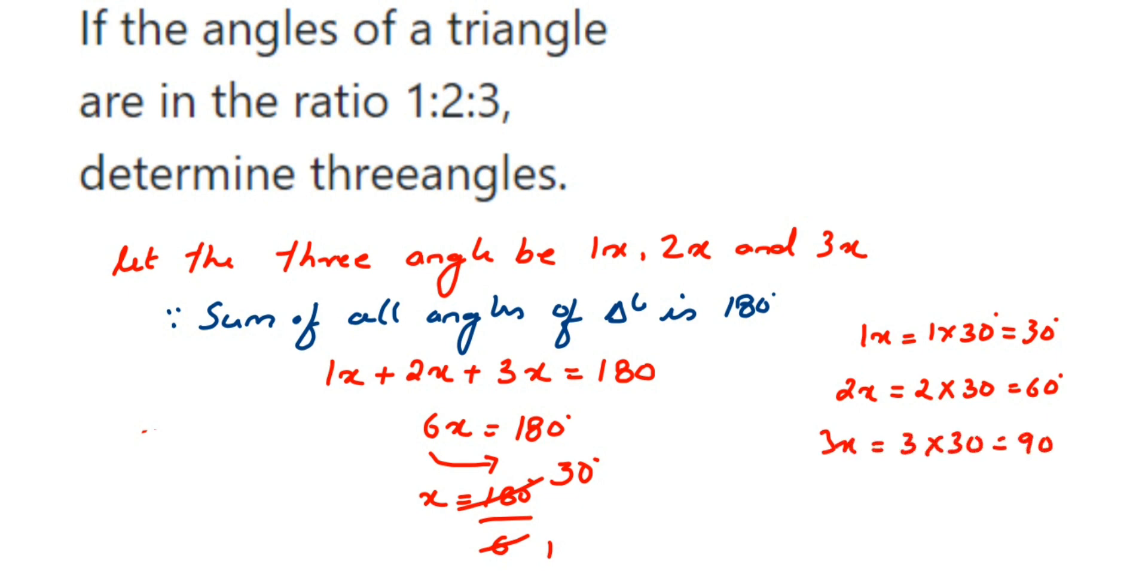Therefore, the three angles will be 30 degrees, 60 degrees, and 90 degrees. Now you can cross-check the angles - you can add up all the three angles: 30 plus 60 is 90, 90 plus 90 is 180, so this means your answer is correct. I hope this question is clear. In case you have any other question or doubt, you can drop a comment. Thank you so much for watching.